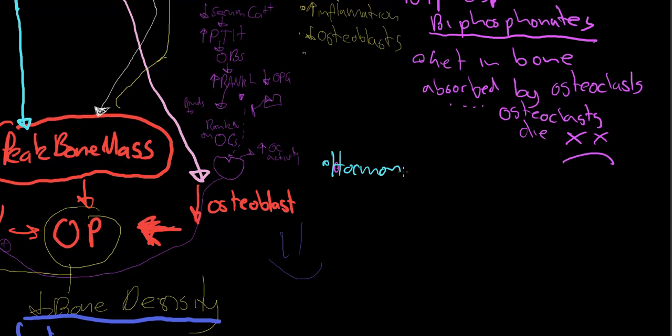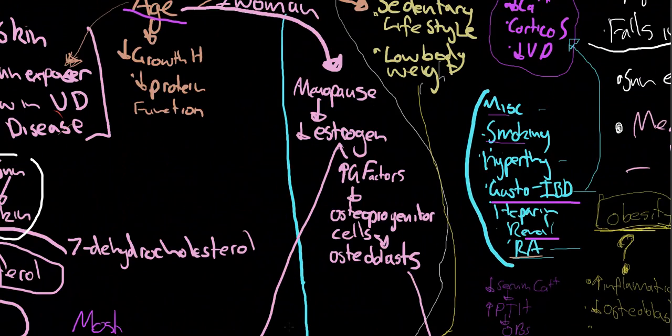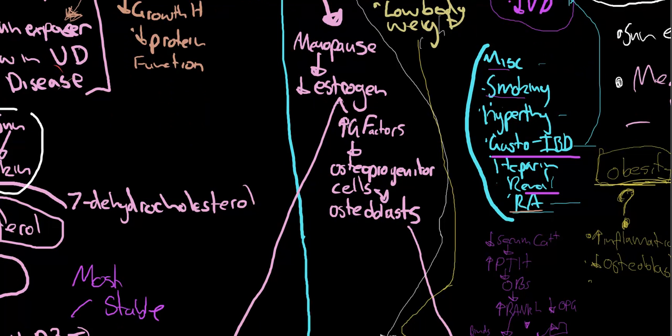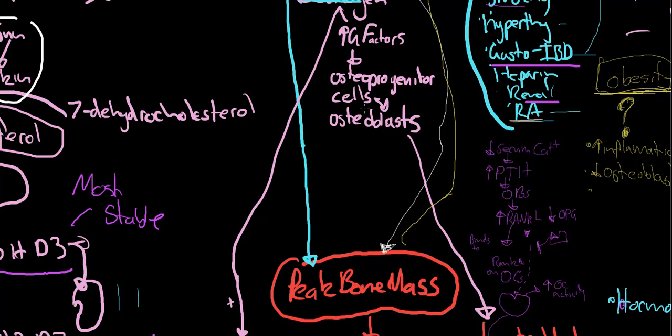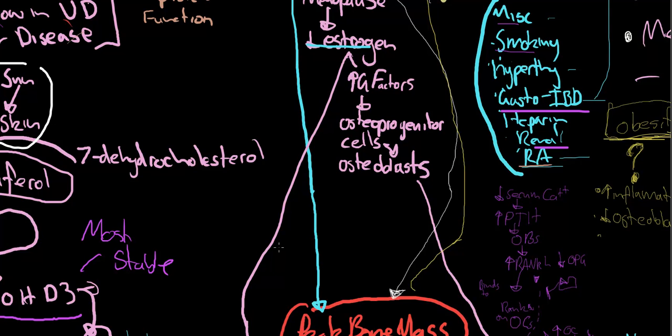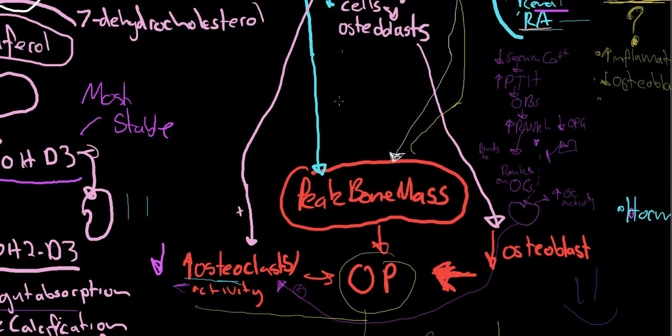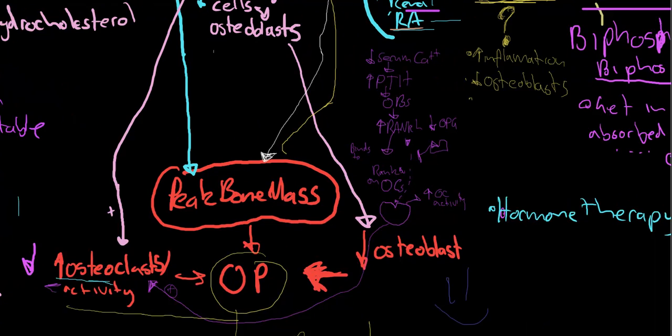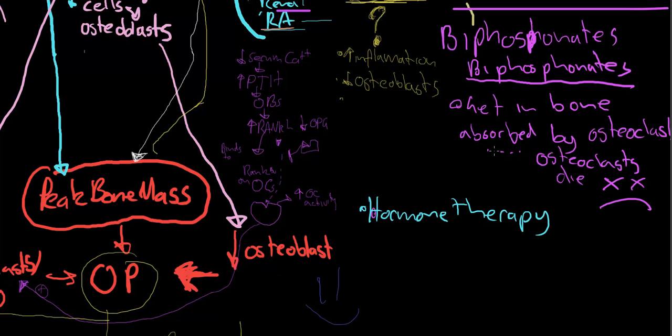Other thing, hormone therapy for women postmenopause. By giving them estrogen, you're going to increase growth factors which increases osteoblasts from osteoprogenitor cells. Estrogen also has a direct effect on osteoclasts—estrogen causes them to die more often, apoptosis. Hormone therapy with estrogen works pretty well.